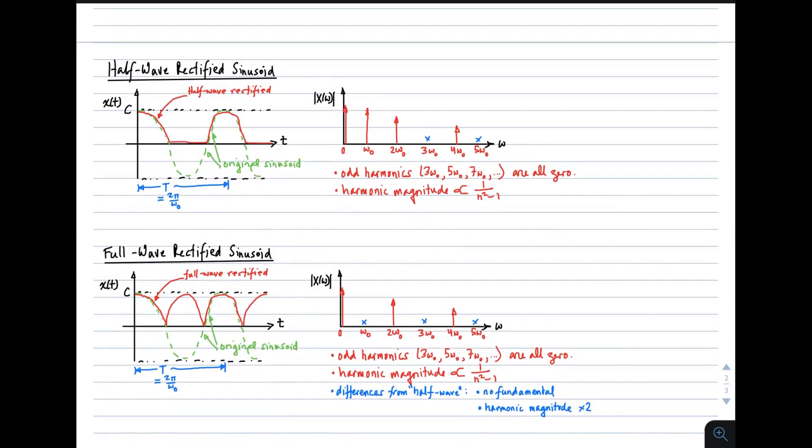Okay, first, the half-wave rectified sinusoid. In this case, the original sinusoid is in green here, and the half-wave rectified sinusoid includes only the positive parts of the waveform, just as I've shown here. The spectrum of a half-wave rectified sinusoid is as shown here. What we see is harmonics at ω₀, at twice ω₀, and four times ω₀. In other words, we see the fundamental, we see the second harmonic, and we see the fourth harmonic.